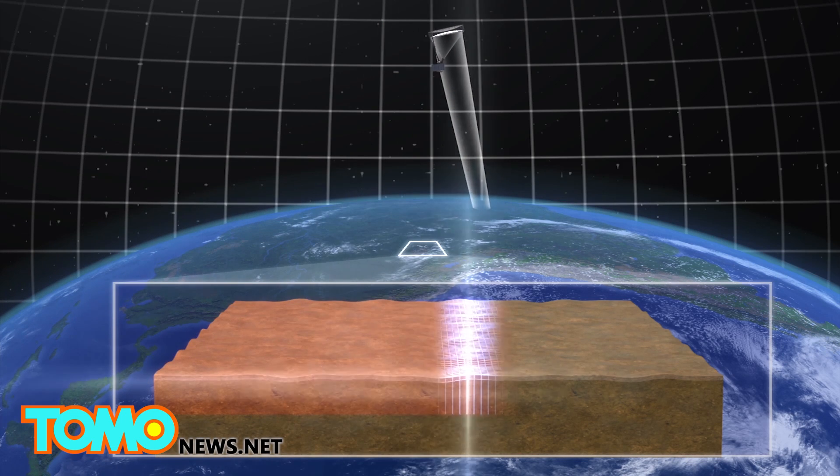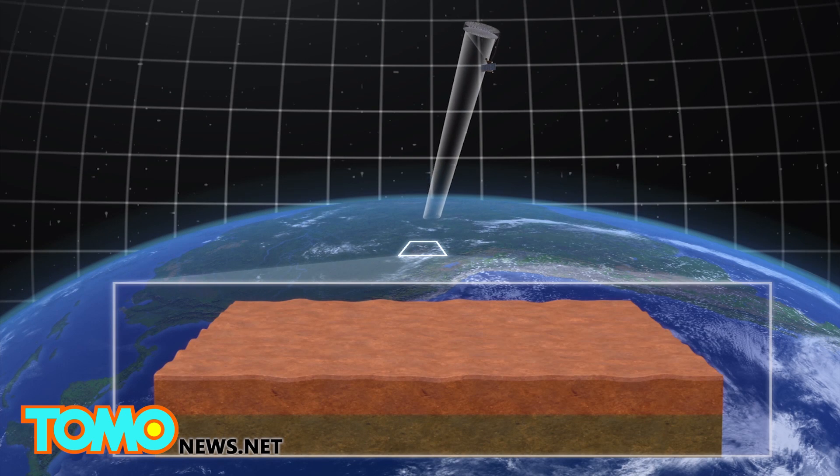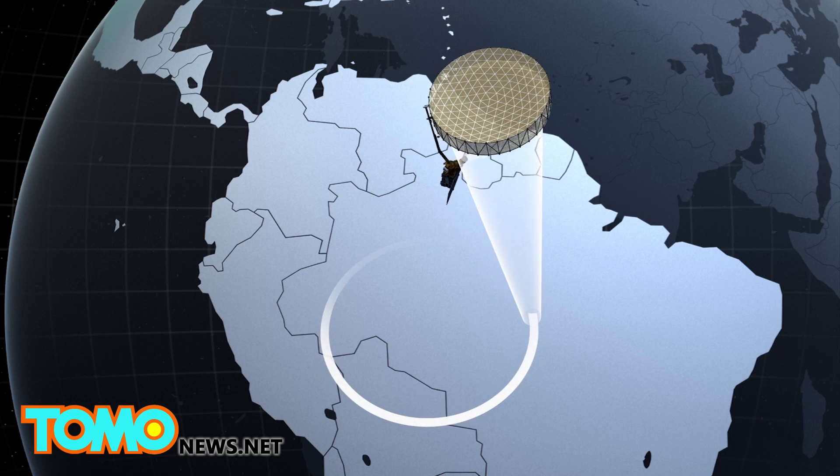The satellite measures moisture levels in the top 5 centimeters of soil on the Earth's surface to produce global maps of soil moisture levels.